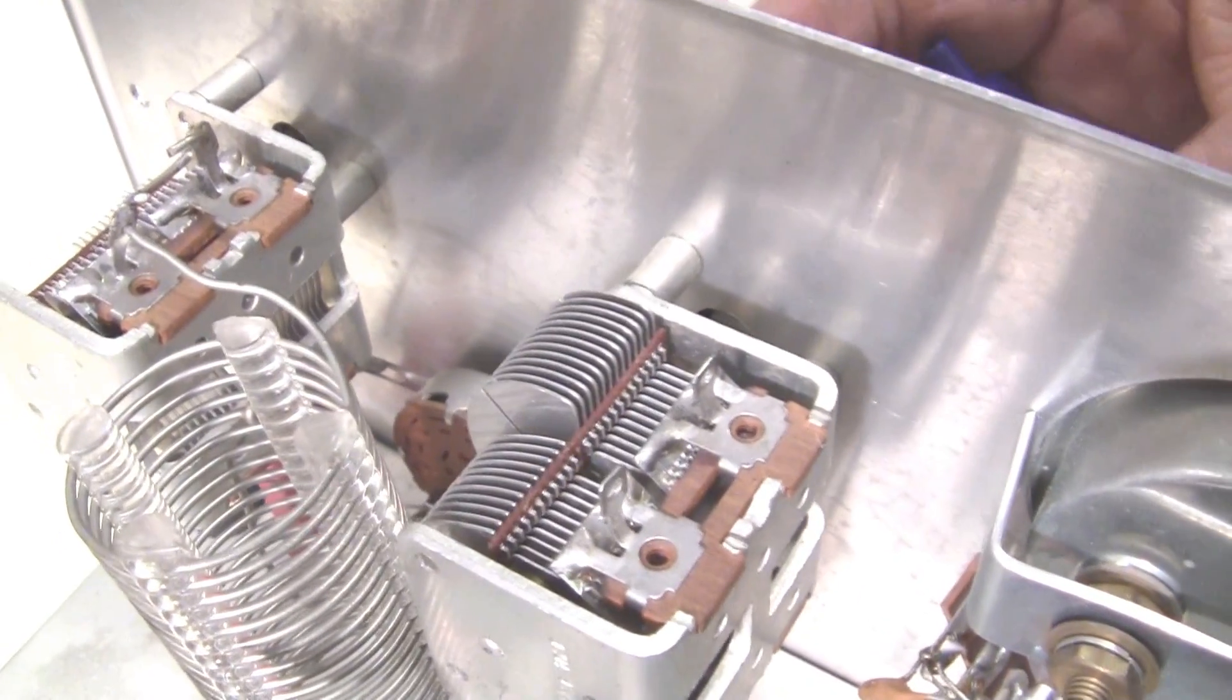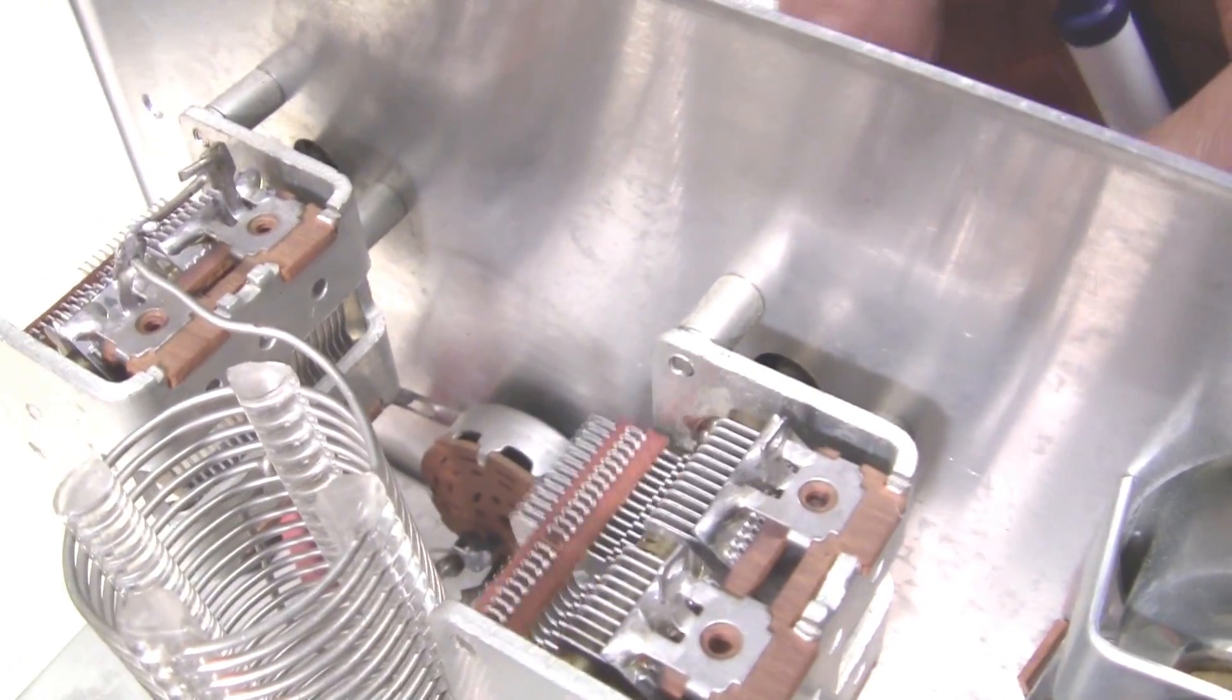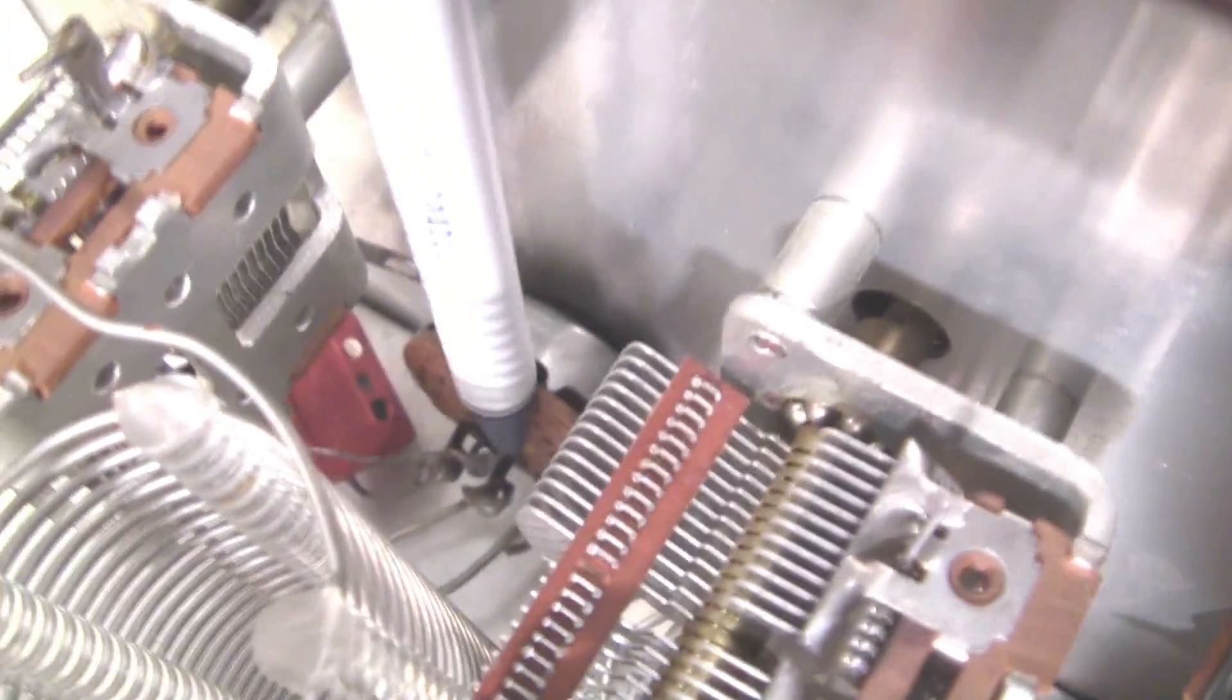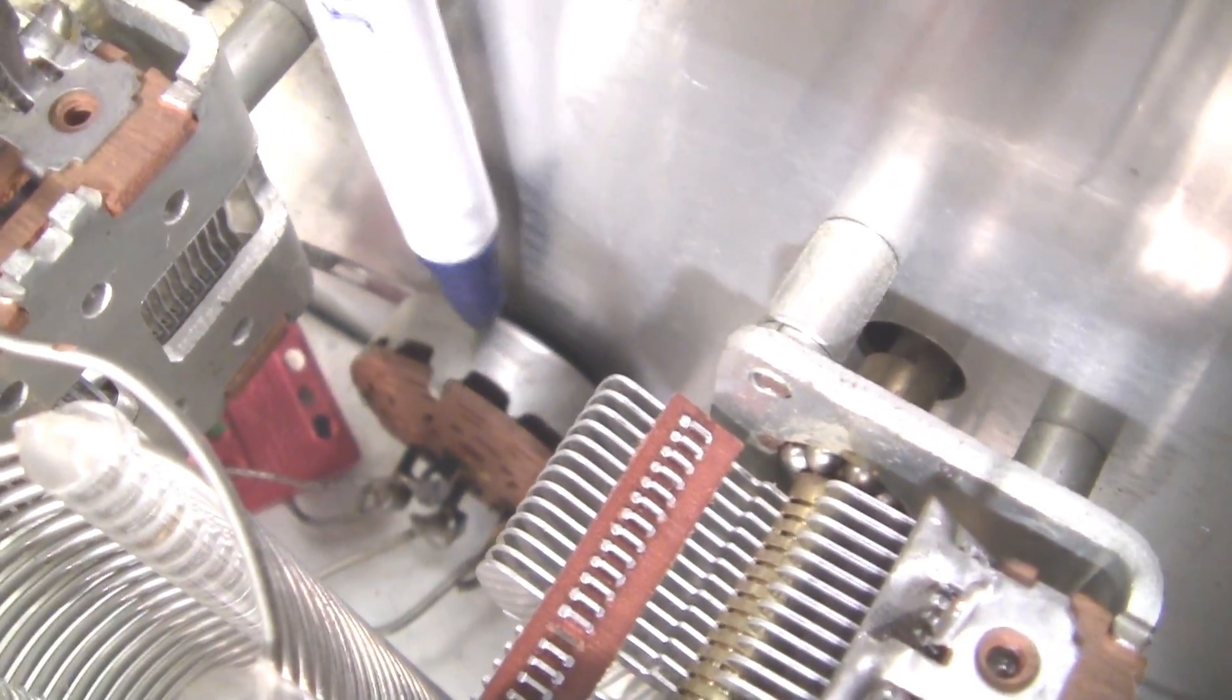And here are the two variable capacitors. We saw those in a schematic or we'll see them. The two in the pi network. There's two of them. One on the input and one on the output. And then down in here is the switch for switching between 40, 15, and 80 meters. The band switch as we would call it.